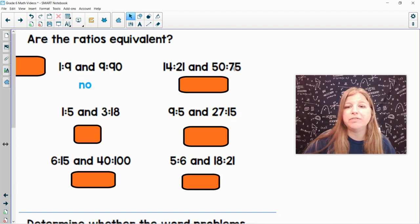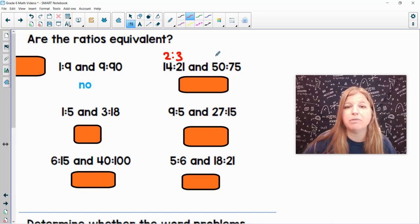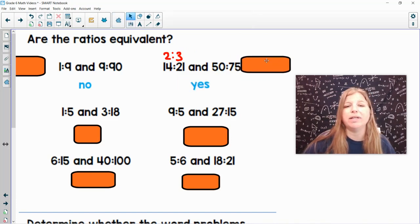14 to 21, 50 to 75. 14 to 21, they're both divisible by 7. So if I divide them by 7, I would get 2 to 3. 50 and 75, if I divide them by 25, the greatest common factor, 50 divided by 25 is 2. 75 divided by 25 is 3. So those two are equivalent. They're both 2 thirds.